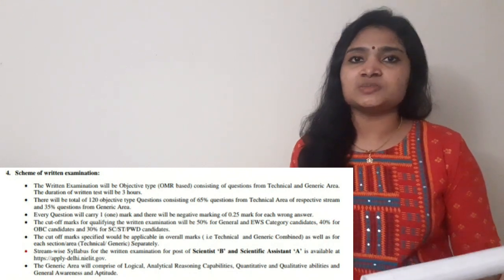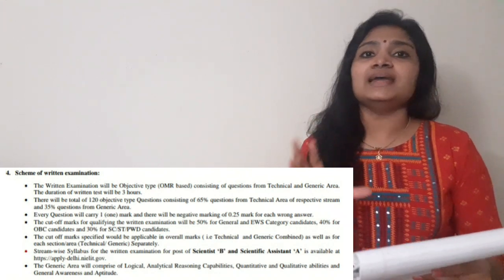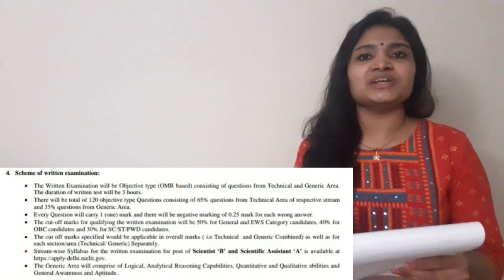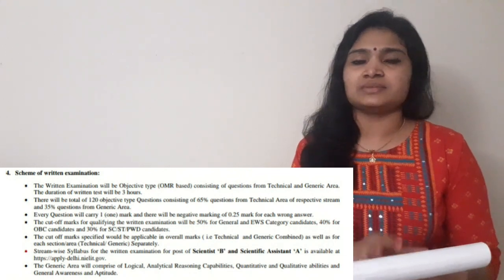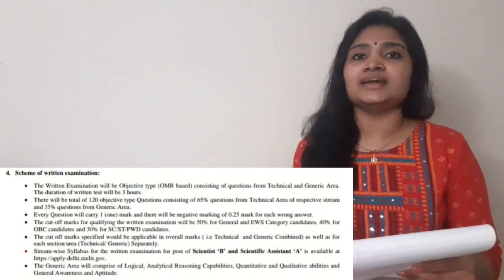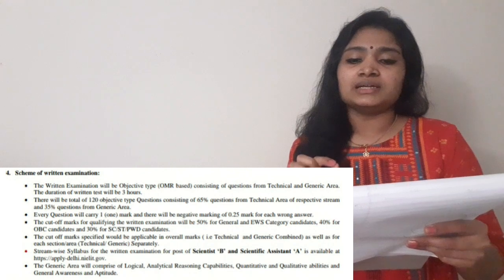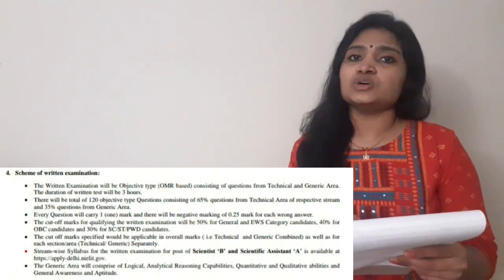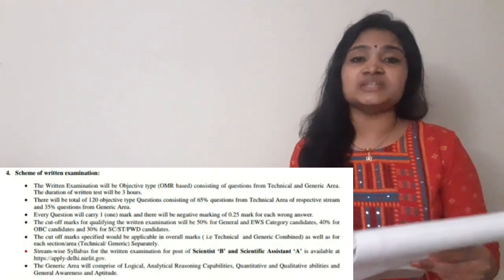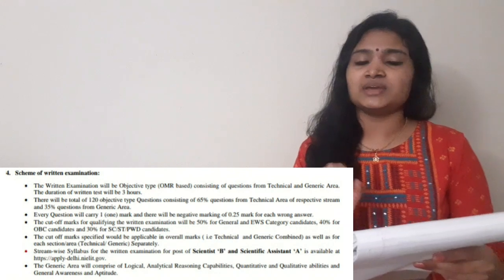There will also be questions from your technical subject. This recruitment is for the Computer Science branch, Information Technology, and also for the Electronics branch. For the generic area, 35% weightage is given — out of 120 questions, that means 42 questions come from aptitude, reasoning, and intelligence.